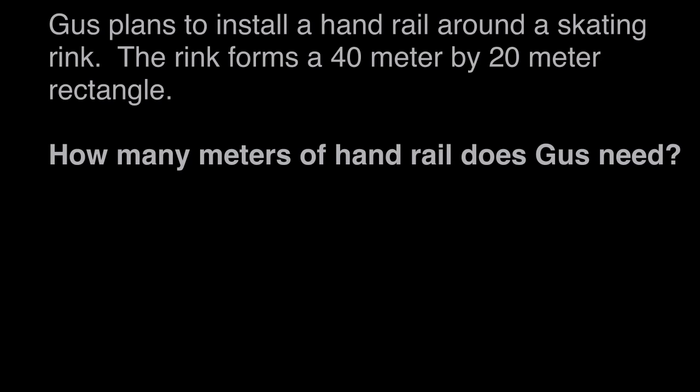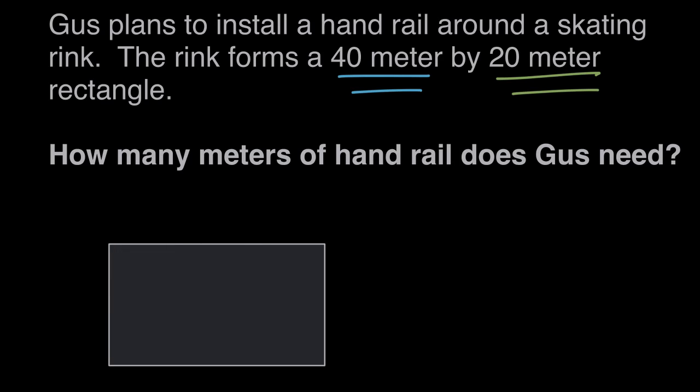So here's what we know about this skating rink. It's a 40 meter by 20 meter rectangle. So let's draw the skating rink. That might help us to visualize.